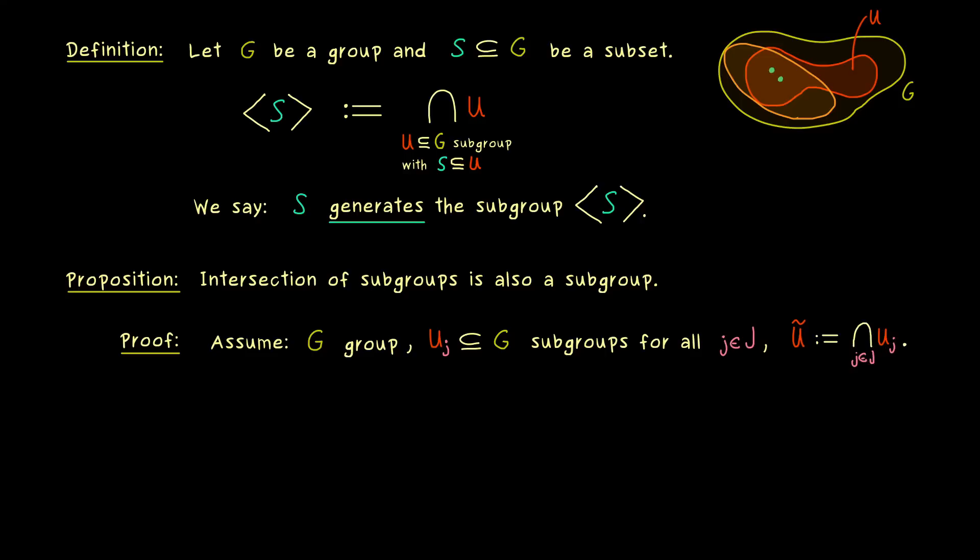So this is a well defined set and now we want to show that this is also a subgroup in G. Now the first thing is obvious, we cannot have an empty set because the identity element E lies in all the subgroups. Therefore it also lies in the intersection, so U tilde is not the empty set. So the first thing for a subgroup is already satisfied, we have the identity element in it.